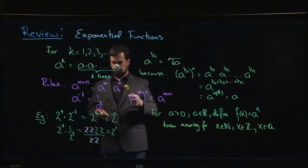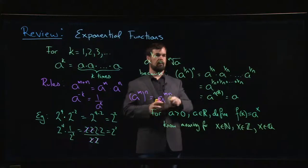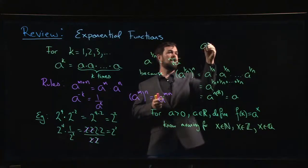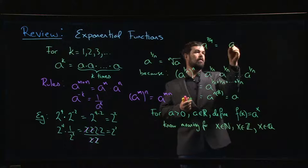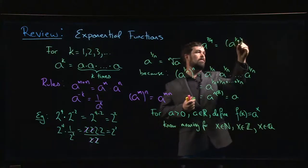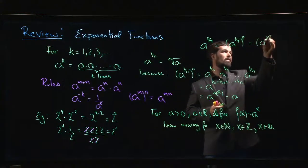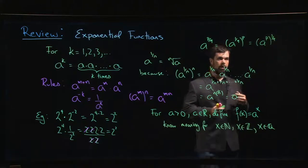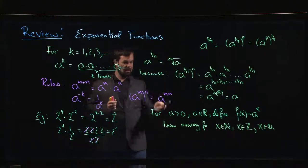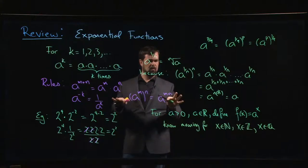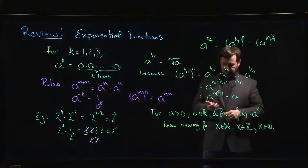For rational exponents, we know how to deal with reciprocals and we have the power rule, so if we want a to a rational number of the form p over q, we can write that as a to the 1 over q raised to the power p, or equivalently a to the p raised to the power 1 over q — it doesn't matter whether you do the power first and then the root, or the root first and then the power. Since a is positive, we don't have to worry about negative bases.